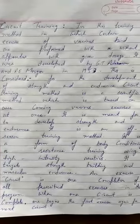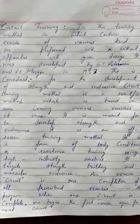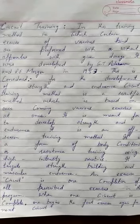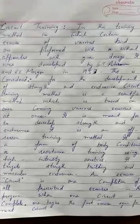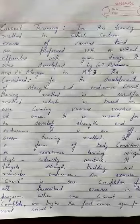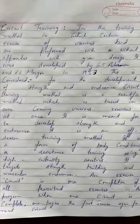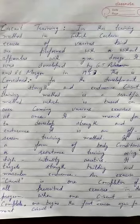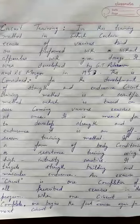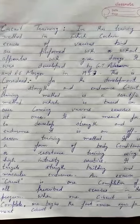Circuit training was developed by G.T. Anderson and R.E. Morgan in the year 1953. Circuit training is considered for the development of strength and endurance. It is a scientific method which is based on overcoming various exercises at once, meant to develop strength and endurance. Circuit training is an off-season training method.